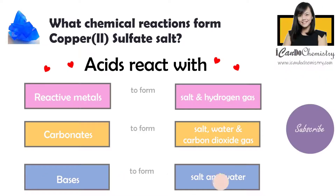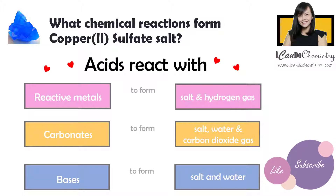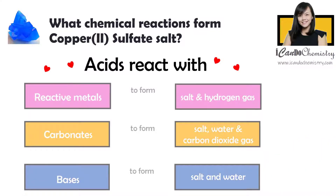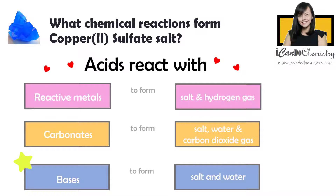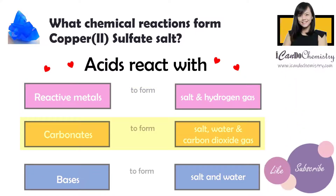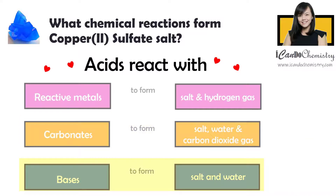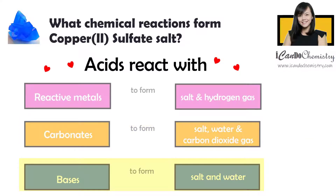There are three ways to form a salt that is soluble in water — the reaction of acid with three different substances: metal, carbonate, or base. Acid reacts with reactive metals to form soluble salt and hydrogen gas. Acid reacts with carbonates to form soluble salt, carbon dioxide gas, and water. Acid reacts with base to form soluble salt and water.